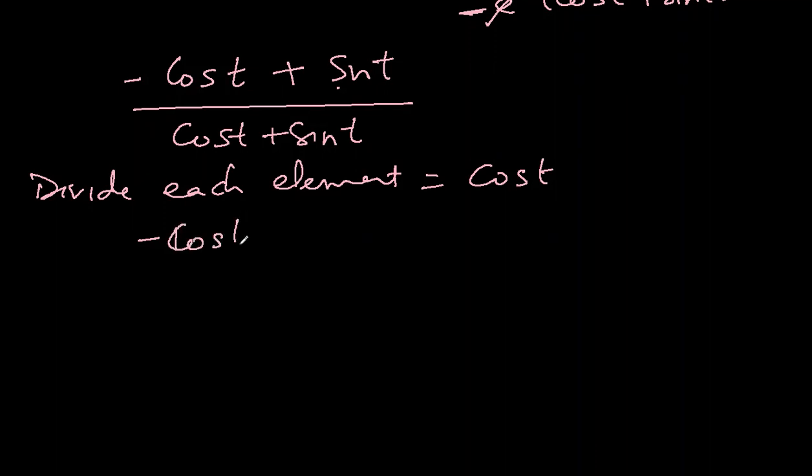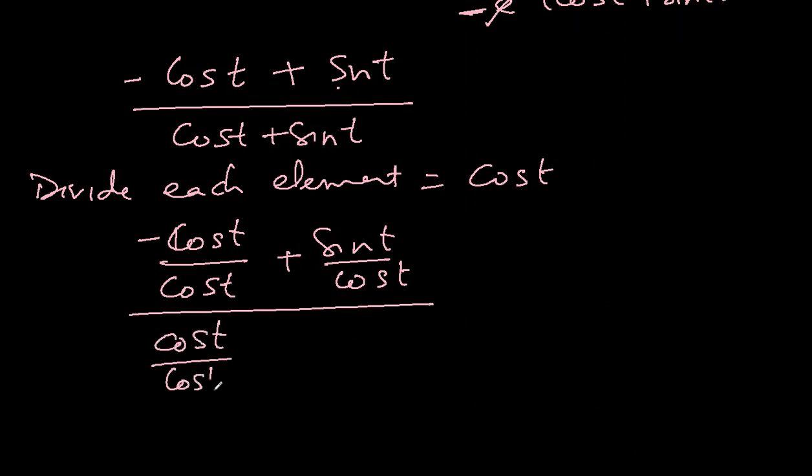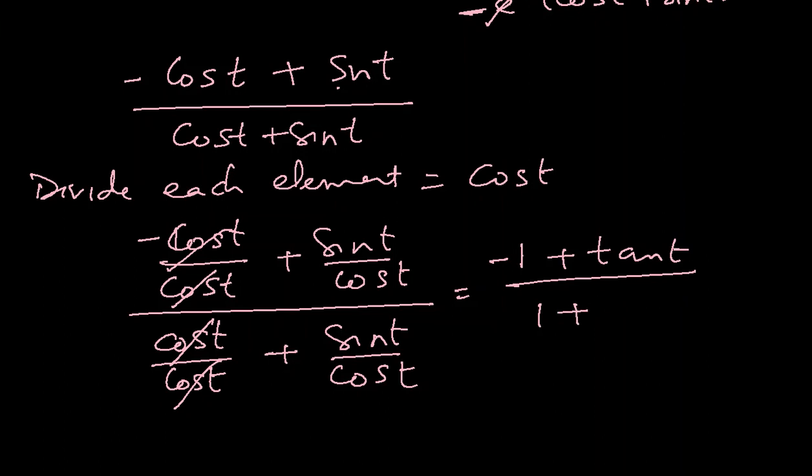Let's write an explanation. Divide each element by cos(t): (-cos(t)/cos(t) + sin(t)/cos(t))/(cos(t)/cos(t) + sin(t)/cos(t)). Purpose was to convert it to tan and convert this to 1. This is cancelled, so it will be (-1 + tan(t))/(1 + tan(t)).